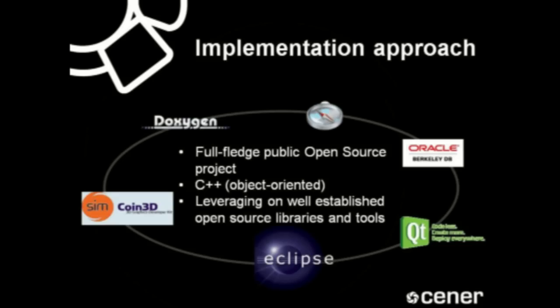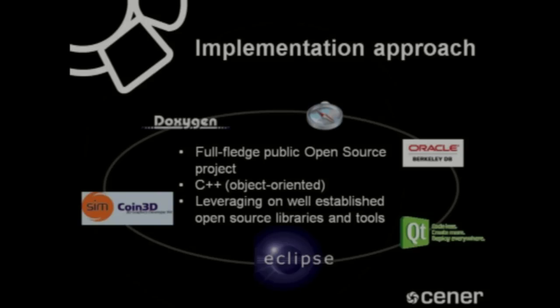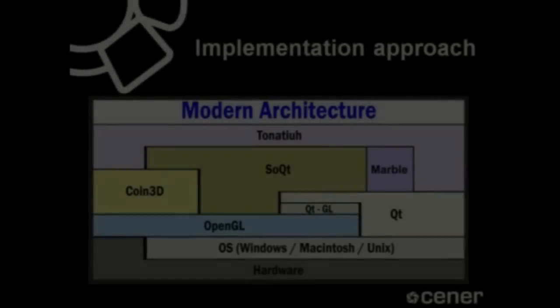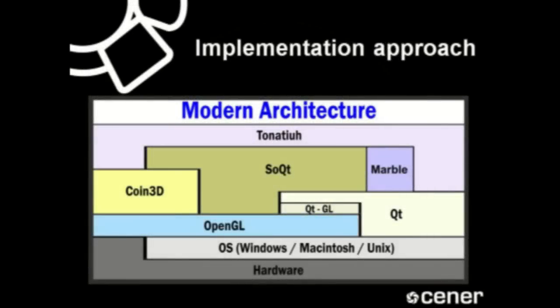The most distinctive characteristics of the approach we are following in implementing Tonatiuh are: the commitment to make the development of Tonatiuh a full-fledged open source project; the decision to code Tonatiuh in C++ using object-oriented techniques; and the intention to leverage the functionality provided by well-established open source libraries and tools.